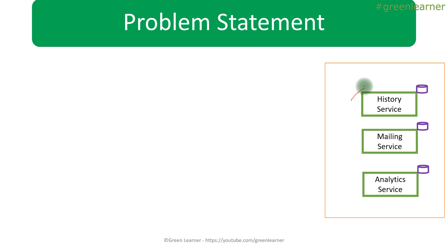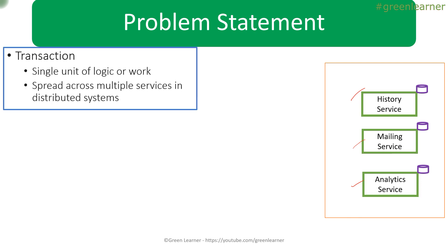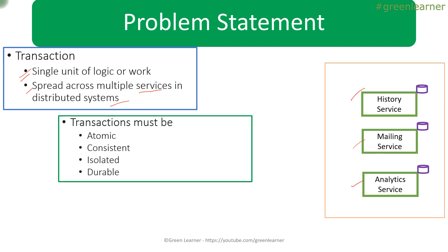Before looking into the Saga pattern, let's understand the problem it is trying to solve. We have a history service, mailing service, and analytics service as examples throughout this video. Under Saga, we are going to understand transaction and data consistency. A transaction is a single unit of logic or work spread across multiple services in a distributed system. In a monolithic application, that transaction is centralized, but in microservices architecture, that set of steps is spread across services.